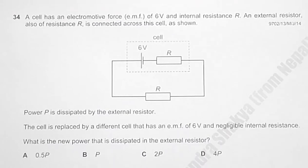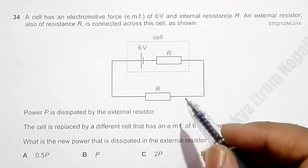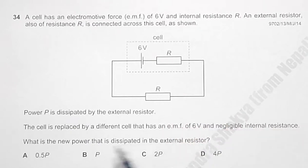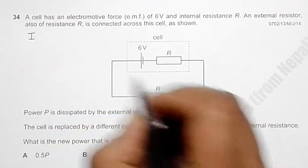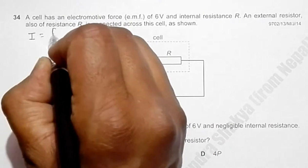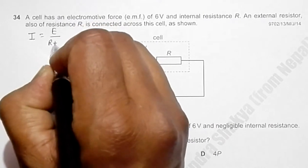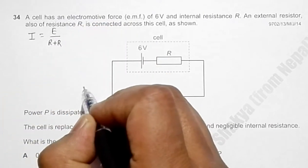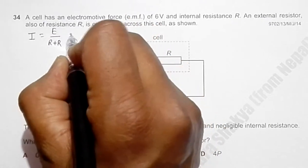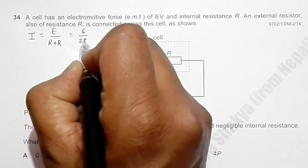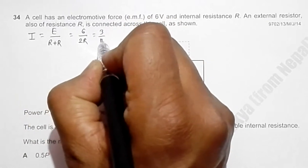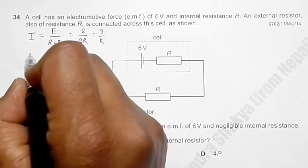So for that, let's first begin with the initial case. The total current through the circuit will be equal to EMF by R plus R. R plus R is the total resistance here, that's equal to 6 divided by 2R, which will be equal to 3 by R.